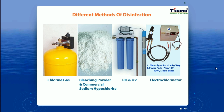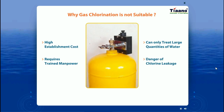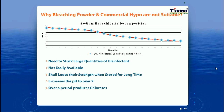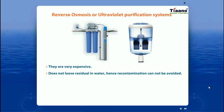Water can be disinfected using different technologies: chlorine gas, bleaching powder or commercial sodium hypochlorite, reverse osmosis, or ultraviolet radiation. Chlorine gas systems are costly, require highly trained manpower, and carry the danger of handling toxic gas. Bleaching powder and hypochlorite lose strength over time and raise water pH. RO and UV systems are expensive, suitable only for small quantities, and leave no residual disinfectant, so treated water can become recontaminated during storage.